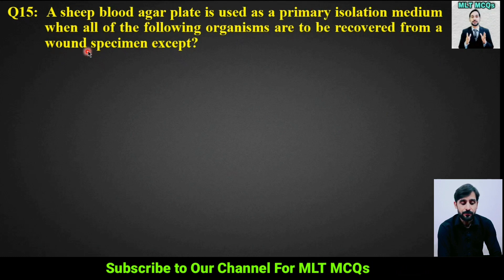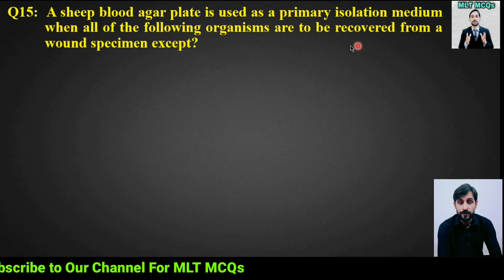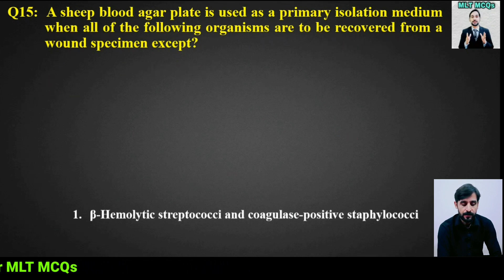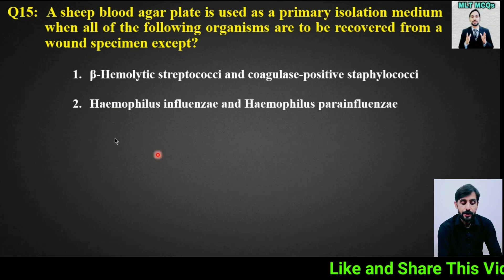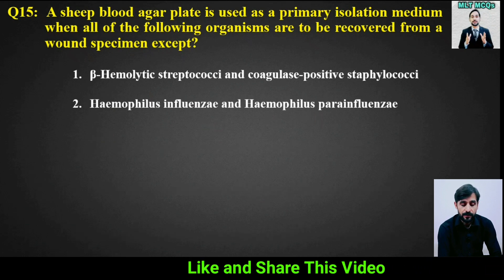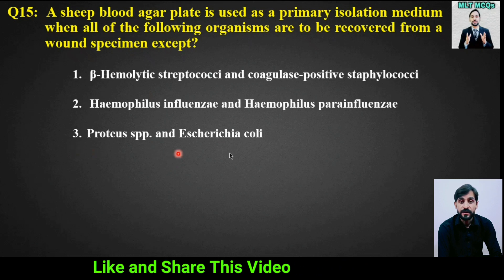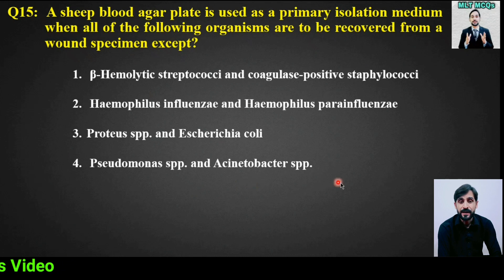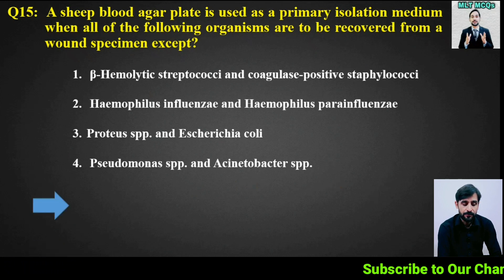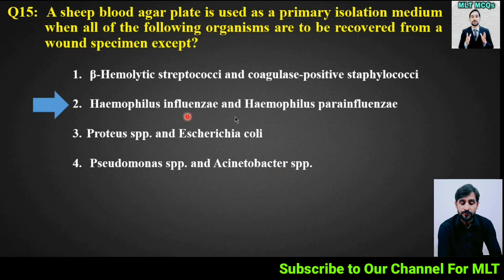MCQ number 15: A sheep blood agar plate is used as a primary isolation medium when all of the following organisms are to be recovered from a wound specimen except — options: (1) beta-hemolytic streptococci and coagulase-positive staphylococci, (2) Haemophilus influenzae and Haemophilus parainfluenzae, (3) Proteus species and Serratia, (4) Pseudomonas species and Acinetobacter species. The right answer is option 2: Haemophilus influenzae and Haemophilus parainfluenzae.